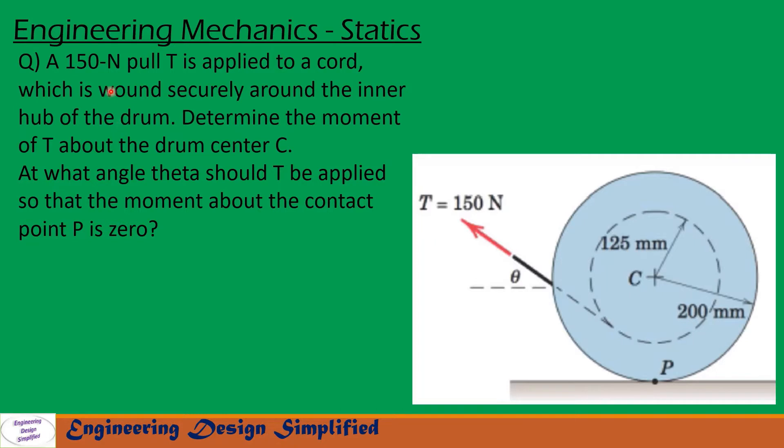Today's problem is: a 150 newton pull T is applied to a cord which is wound securely around the inner hub of the drum. Determine the moment of T about drum center C. At what angle theta should T be applied so that the moment about the contact point P is zero?